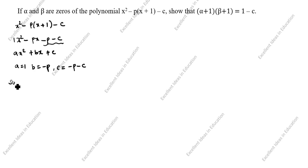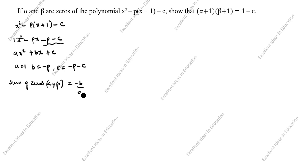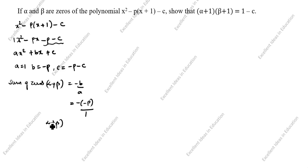Next, sum of zeros: alpha plus beta equals minus b by a. What is b value? b is minus p. So minus of minus p divided by a is 1. Alpha plus beta is equal to p.